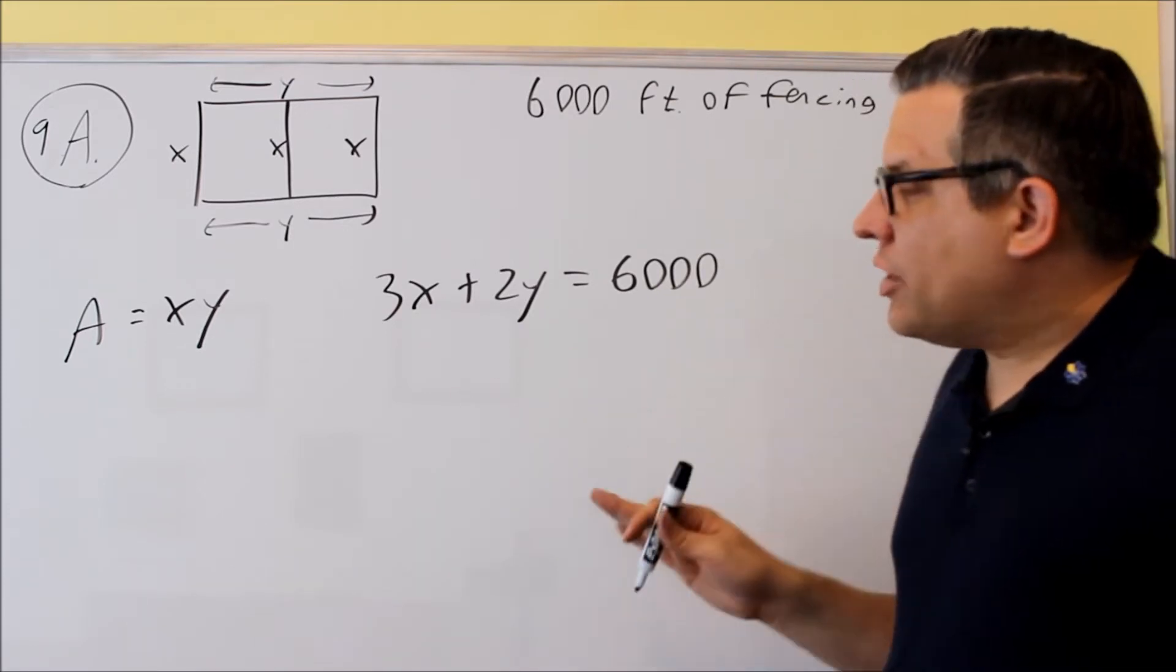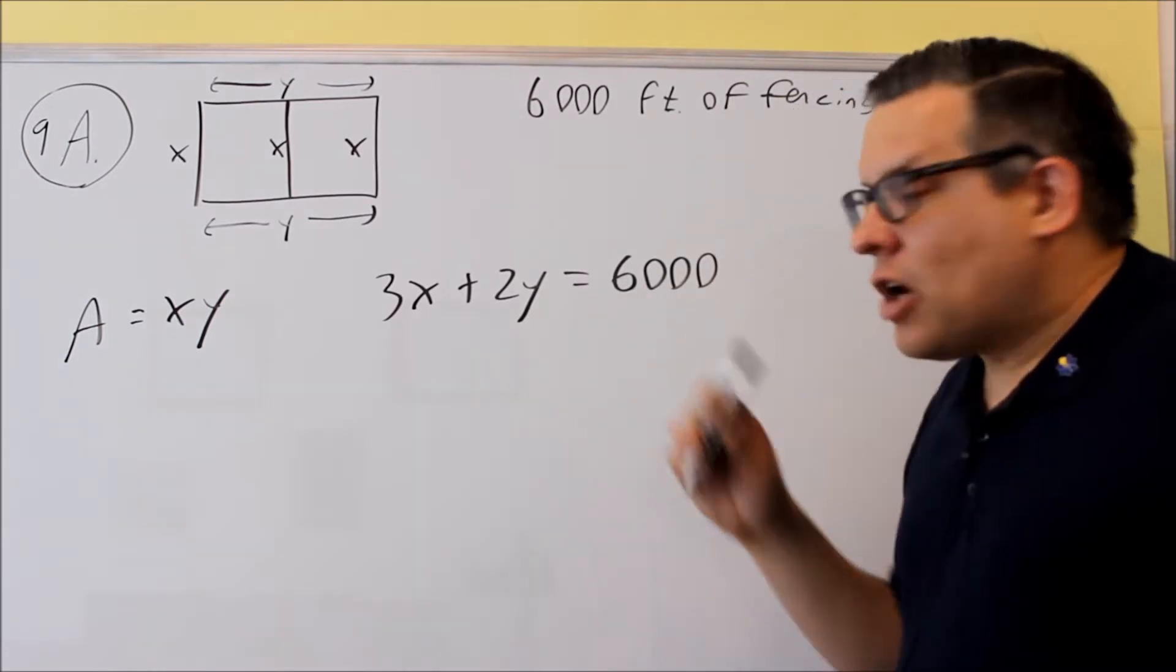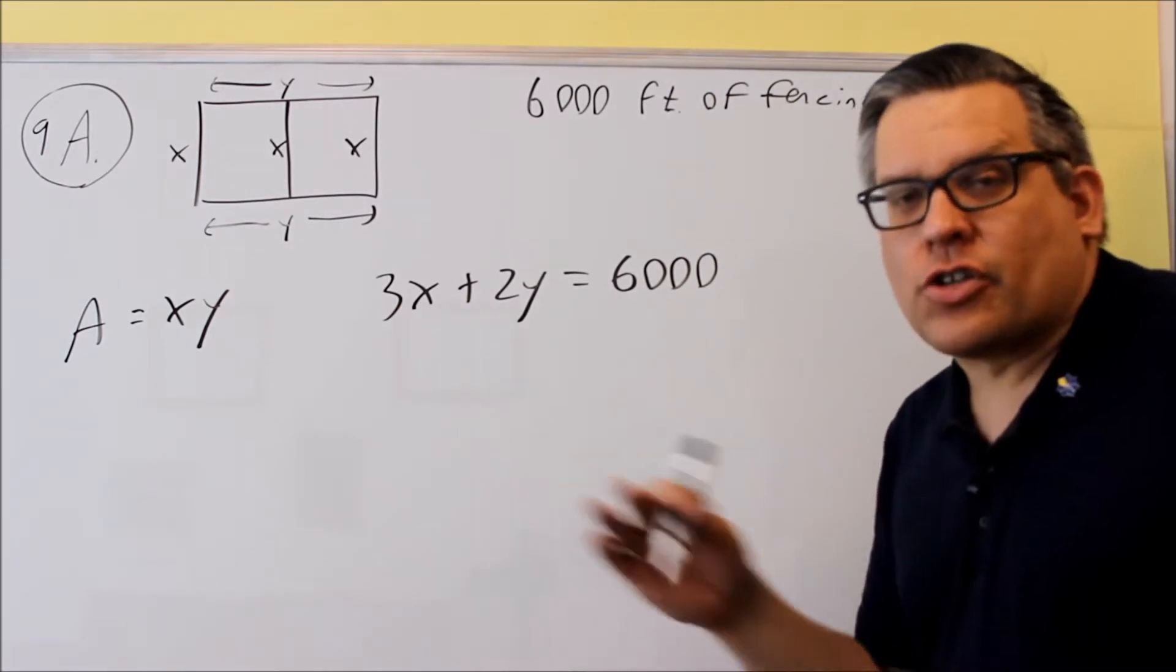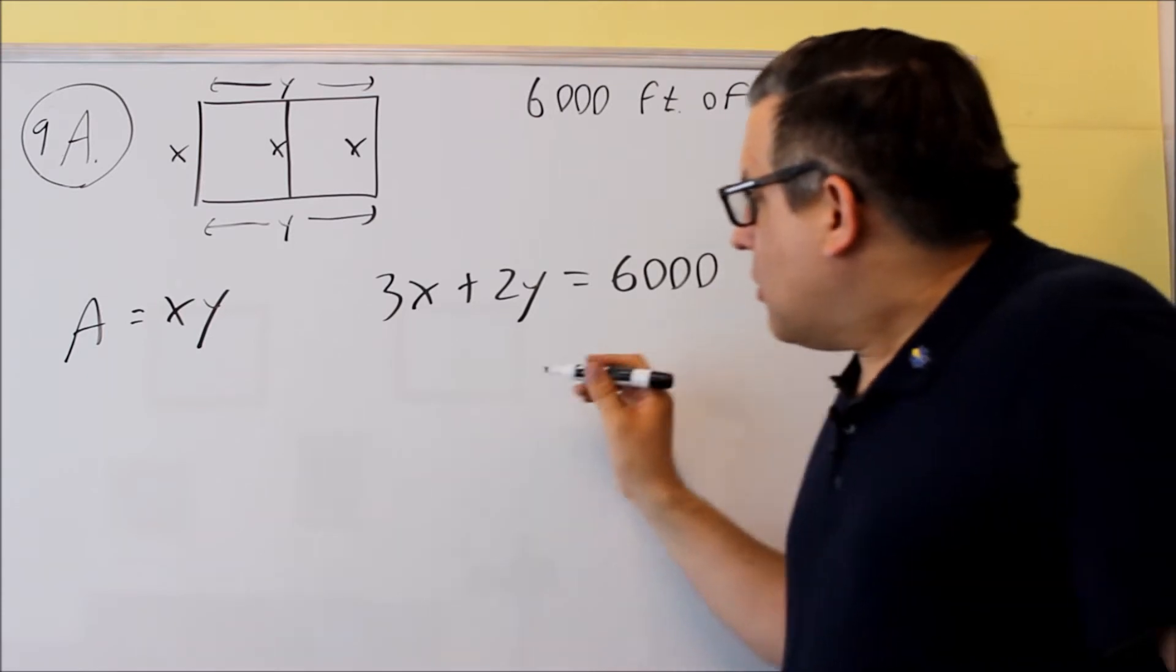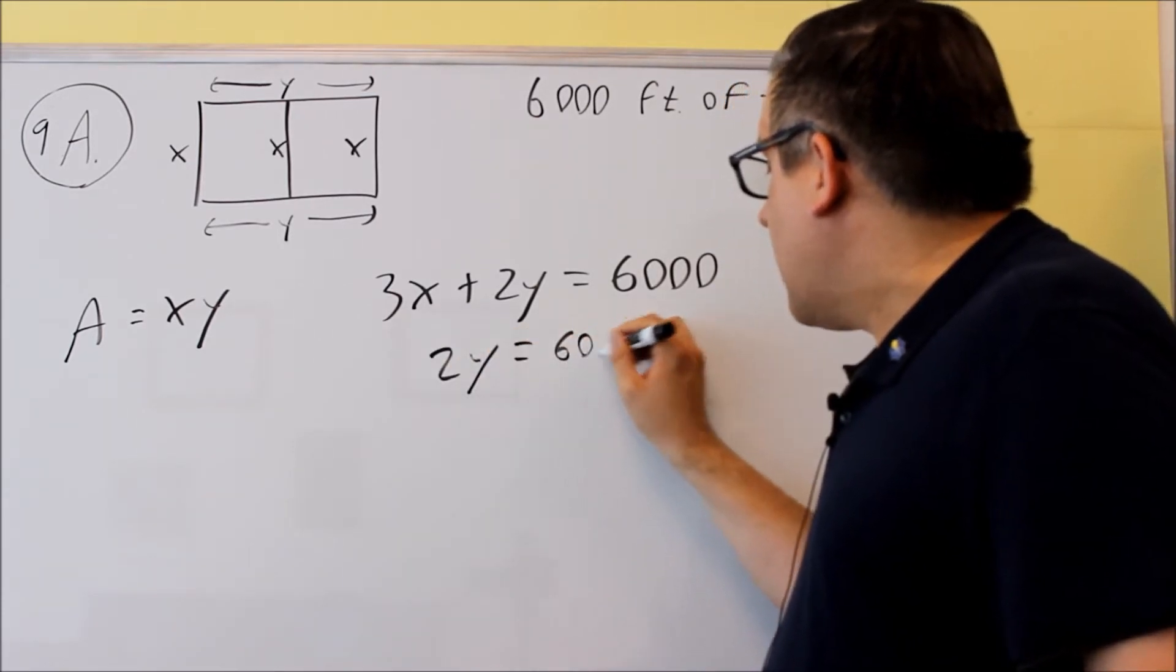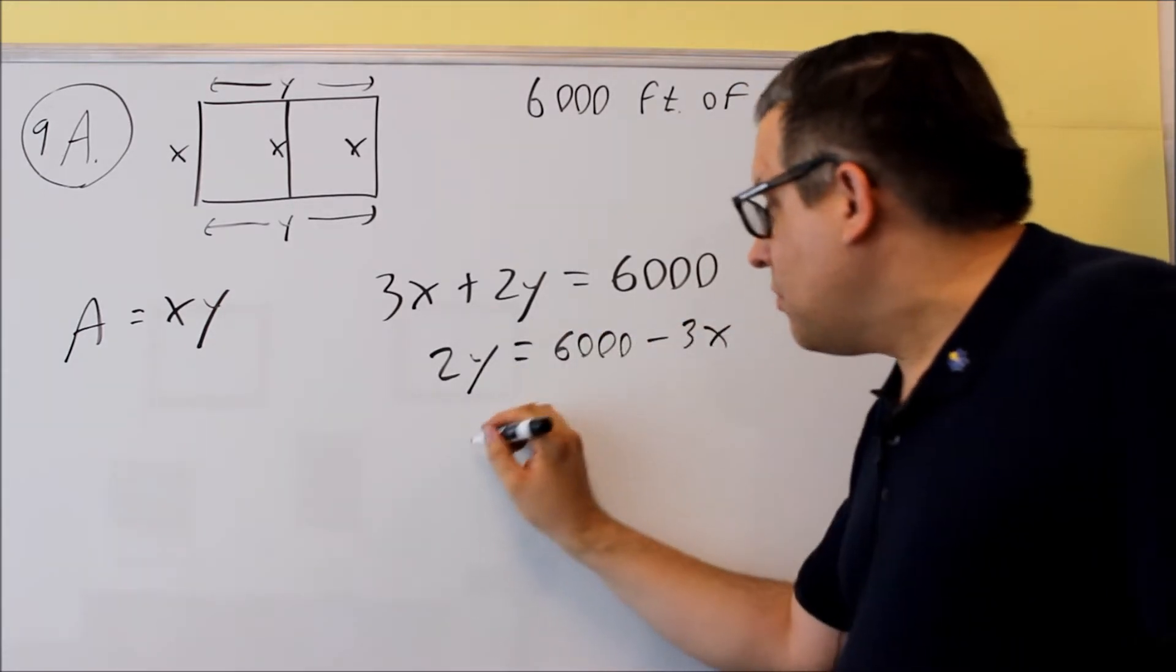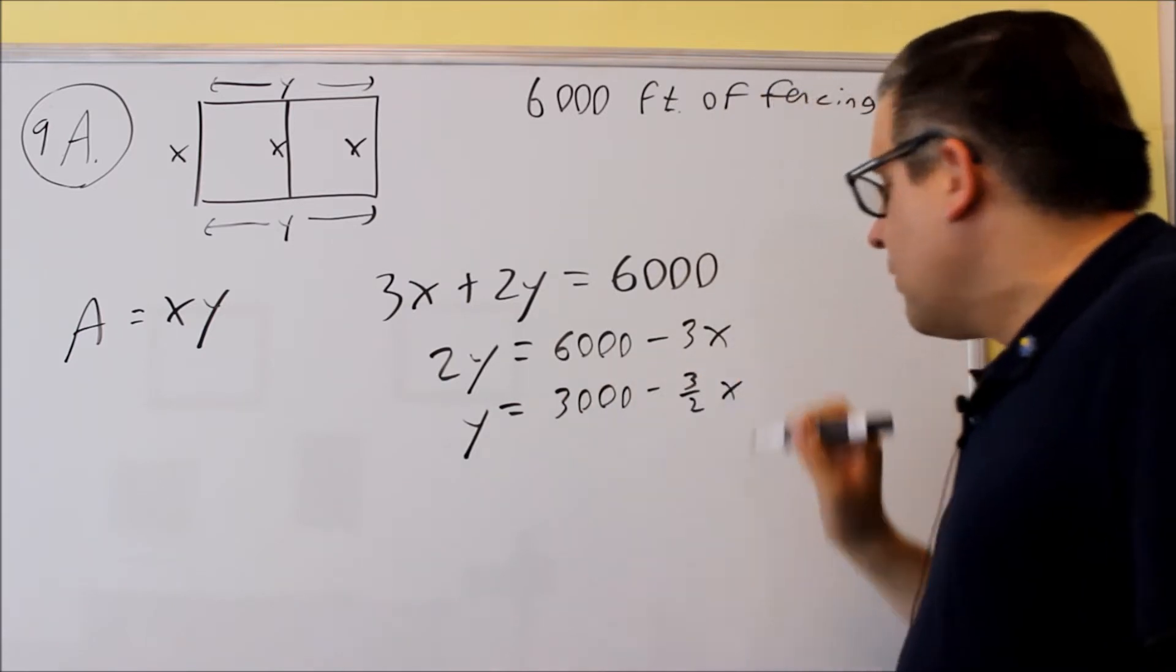Now what we're going to do is we need to solve for either x or y. I'm going to solve for y so that we get an equation that's all in terms of x, so it makes it easier when we do our vertex formula. If I solve for y, I'll do 2y equals 6,000 minus 3x, then divide everything by 2 and I'll get 3,000 minus 3 halves x.